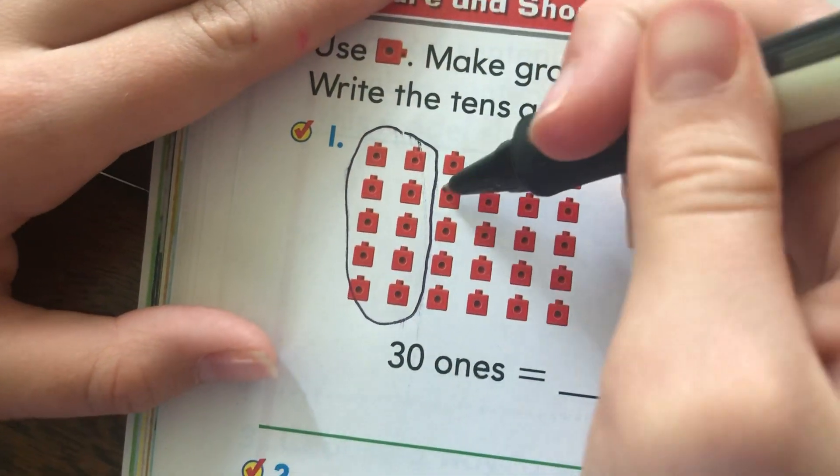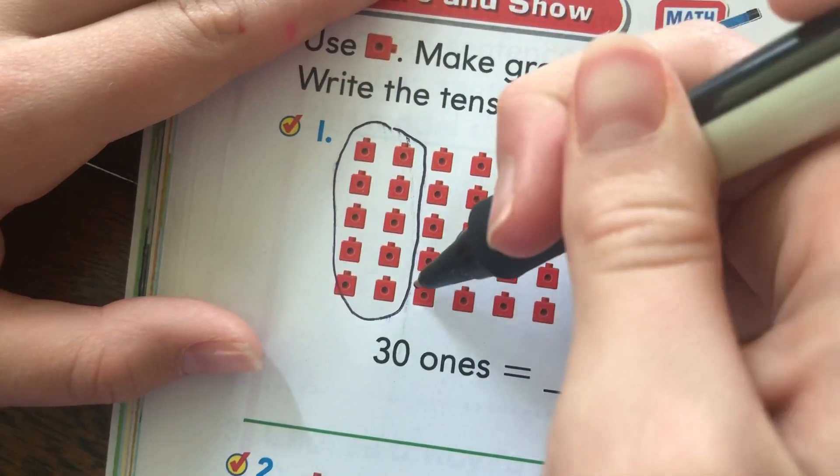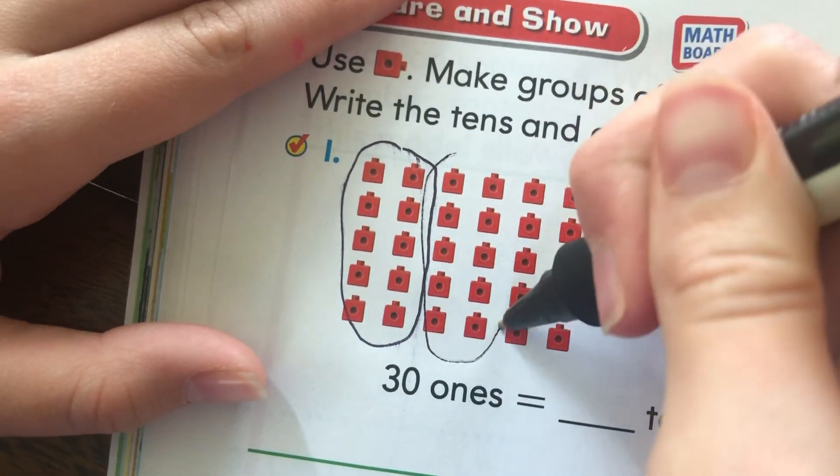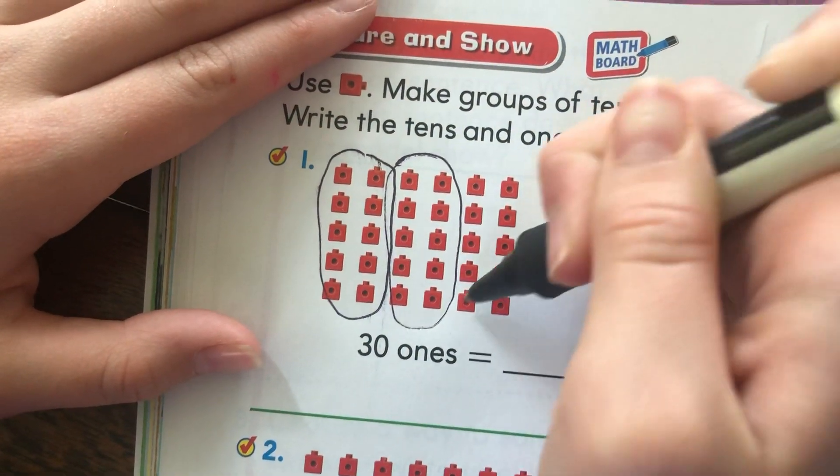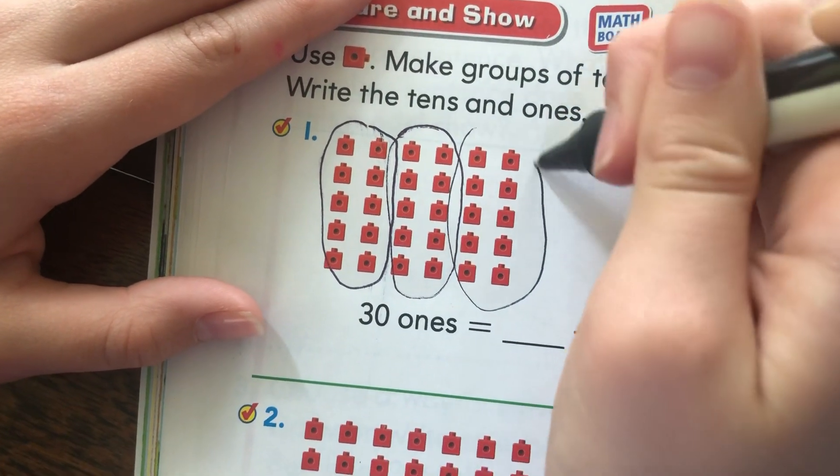Okay, now one, two, three, four, five, six, seven, eight, nine, ten. Okay, let's circle this one. One, two, three, four, five, six, seven, eight, nine, ten. Oh, let's circle this one too.